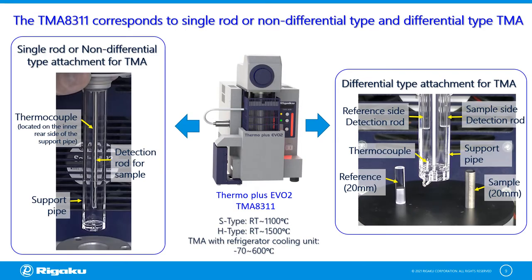The TMA 8311 corresponds to the single rod or non-differential type TMA and differential type TMA. In the single rod or non-differential type TMA, you can find a support pipe or support tube and two detection rods — one is for the sample and the other one is for the reference material. Both attachments can correspond to sample lengths of 10 to 20 mm. In the next two slides, each of these measurement principles will be explained.